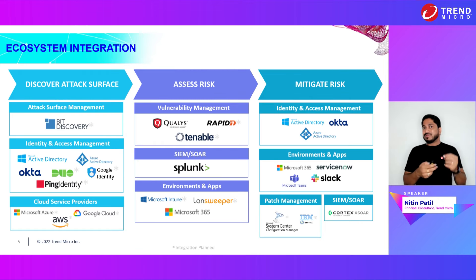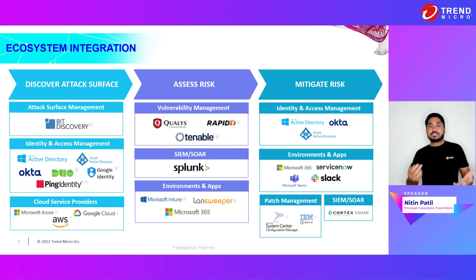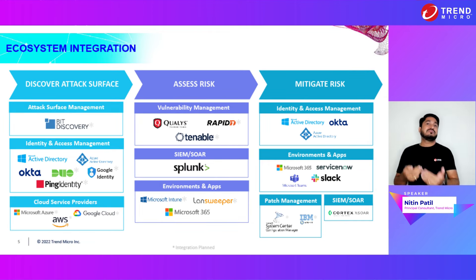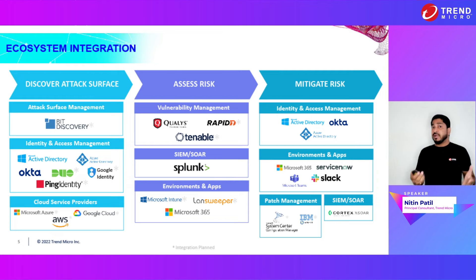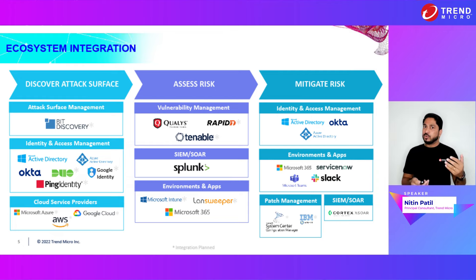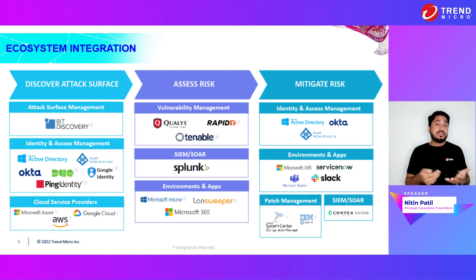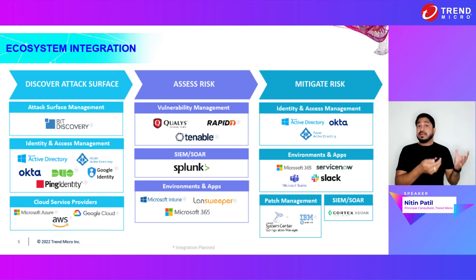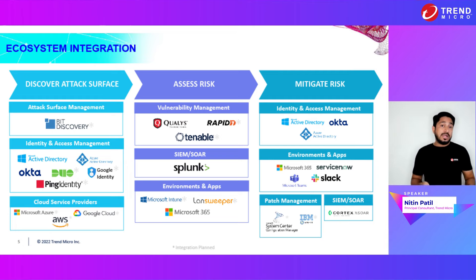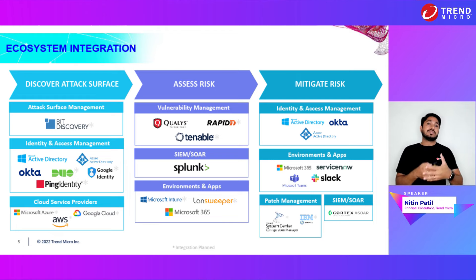When we talk about doing these capabilities in three phases, it cannot be done independently. That's why Trend Micro has built a huge ecosystem integration for the discovery phase, assessment phase, and mitigation phase. For example, in the discovery phase, we have an OEM with BitDiscovery, who is a leader in external attack surface management — they know exactly what an attacker's view of your enterprise looks like from the outside in. We are leveraging that for external attack surface management. We are also leveraging SIEM and identity access to get more insights from a user and device perspective. We take SIEM data to build a risk score and assess risk, whether it be a scan tool, SIEM, or another platform.